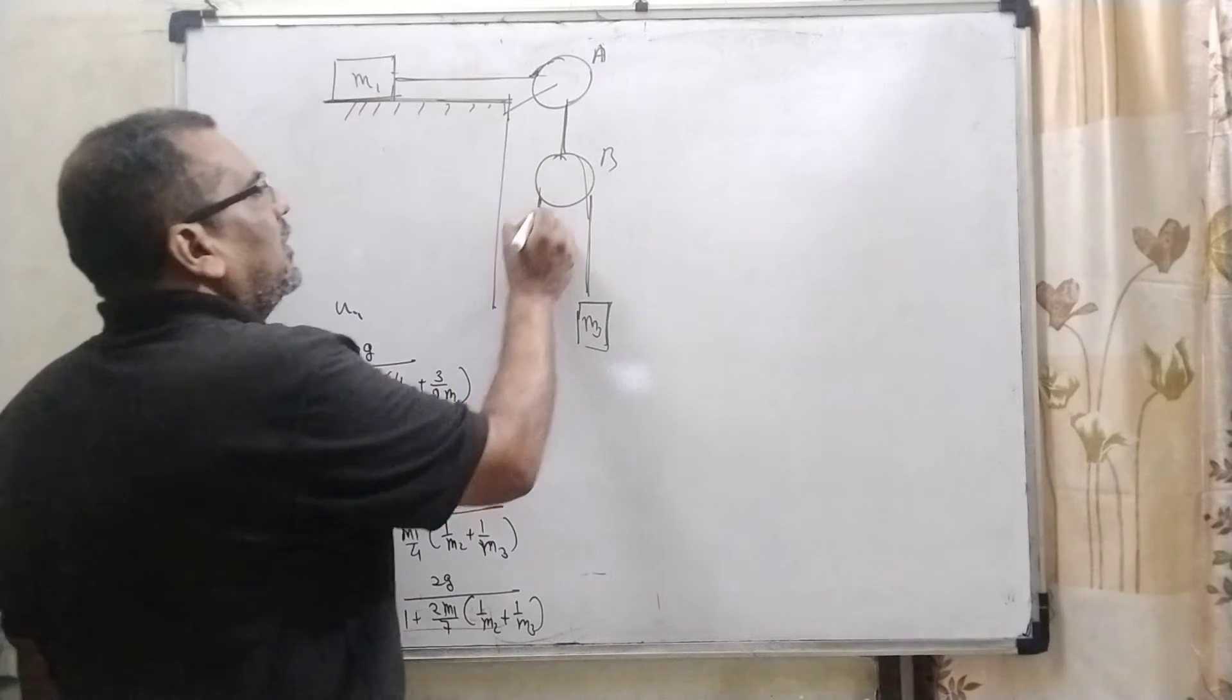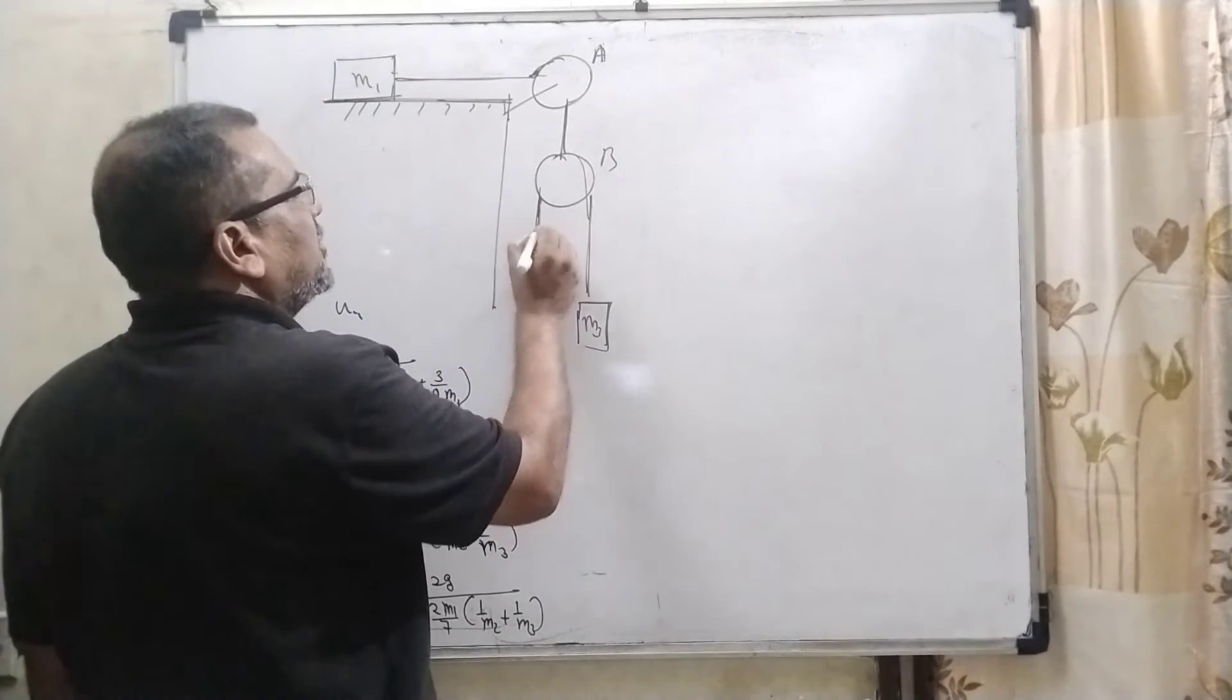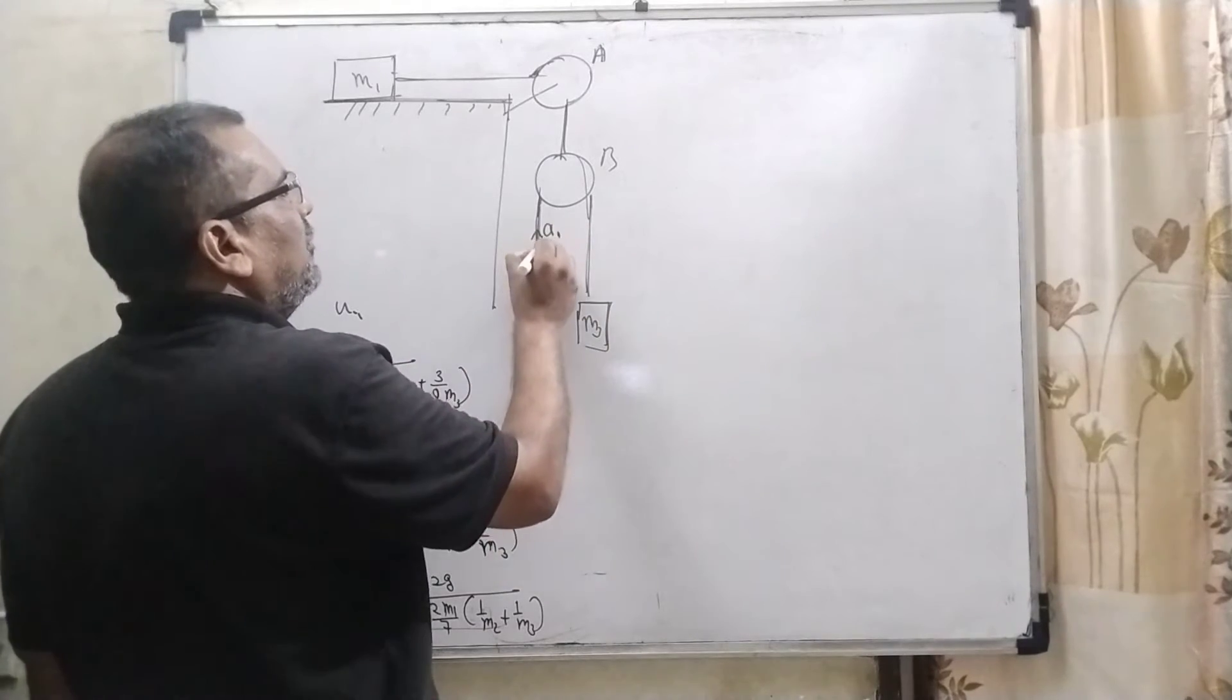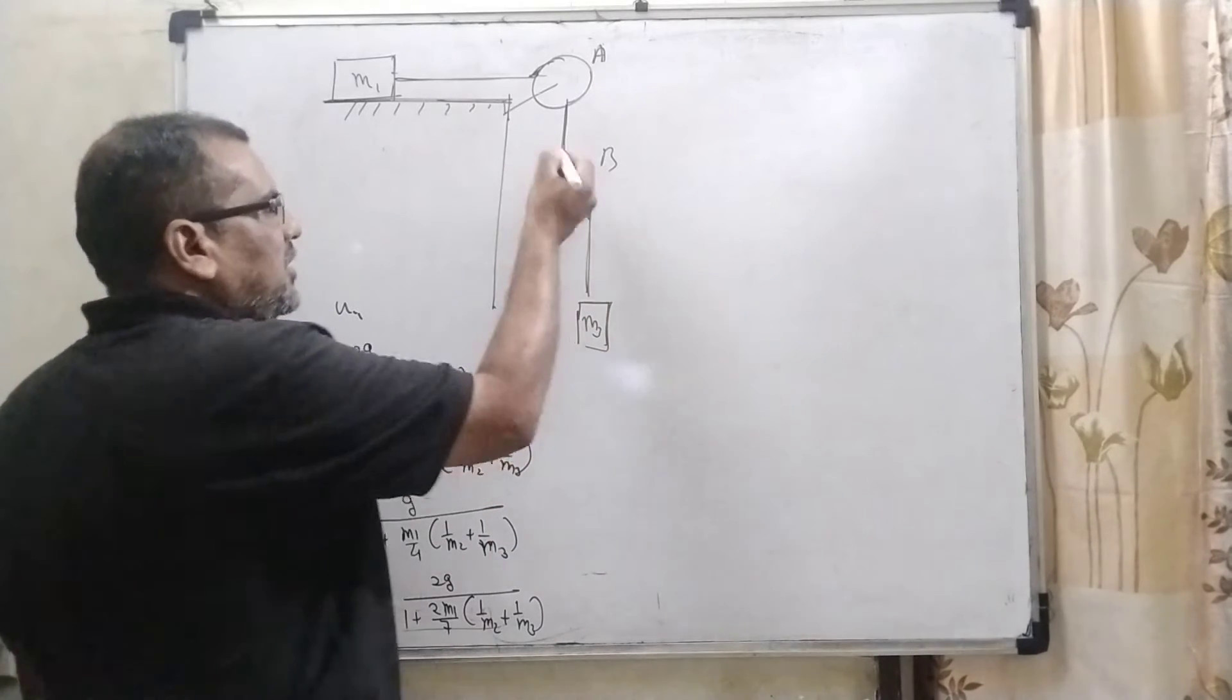And the whole system is falling downward direction. So here, acceleration, relative acceleration, let us suppose its acceleration is A1, which is, its direction is upper direction.